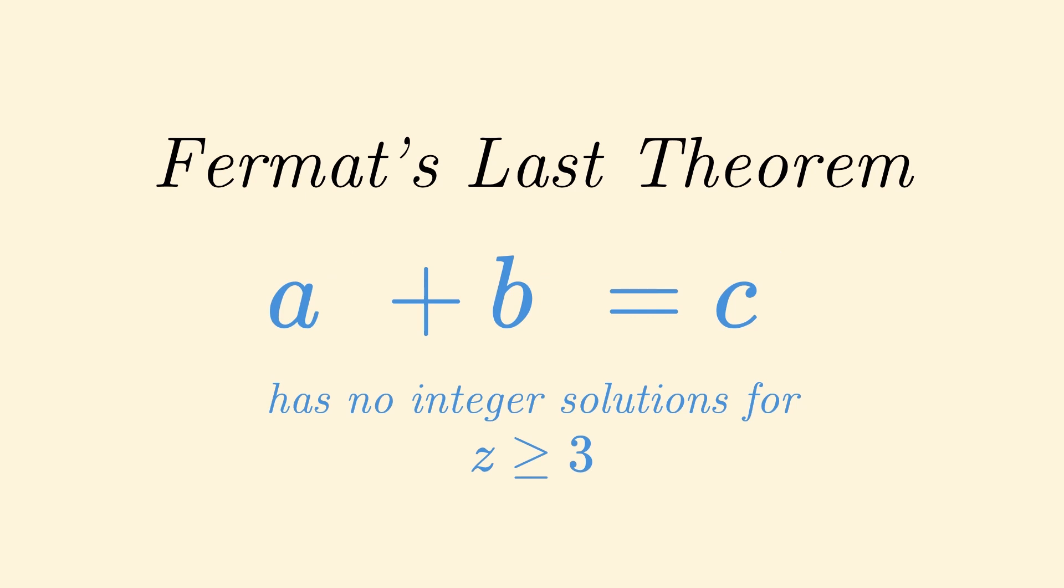Take for example z equals 3. It says that the sum of two cubes can never be another cube, which is a bit crazy if you think about it. After all, there are infinitely many squares that sum to other squares.